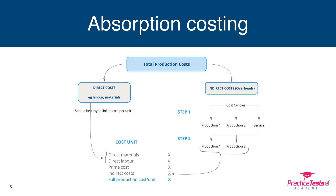We then reapportion, in step two, the service cost centres to production cost centres, because we're aiming to calculate costs per unit and service cost centres don't see any items being produced, so we share their costs out between the production cost centres. Once all production overheads are in production cost centres, we absorb them using a reasonable basis like labour hours or machine hours in those production cost centres, and add those costs to prime costs to get full cost per unit.